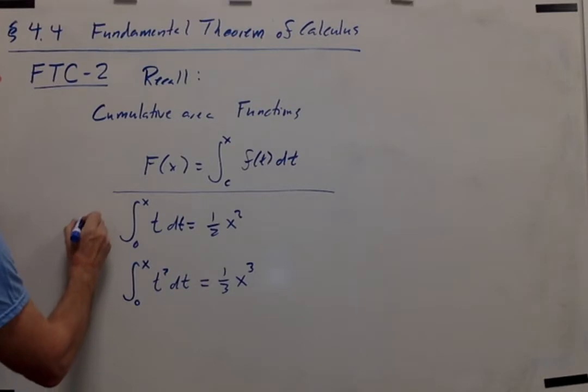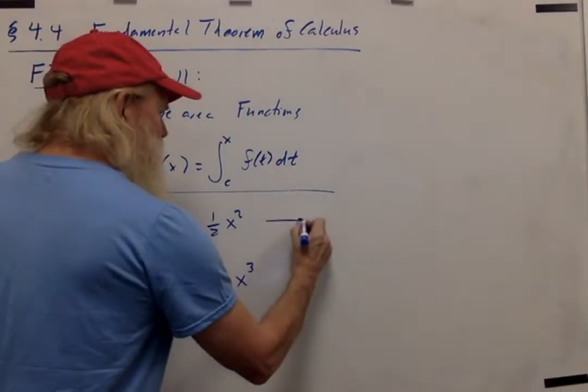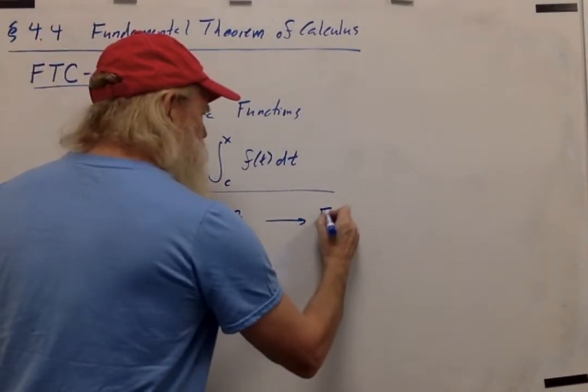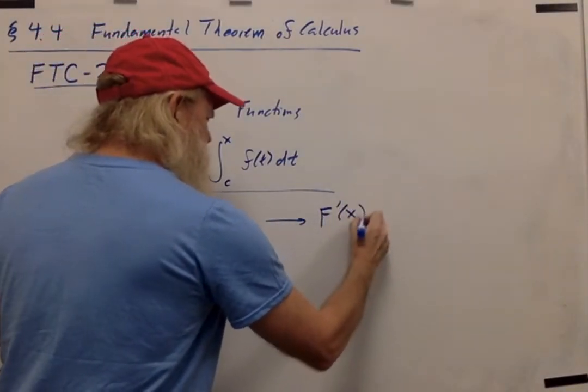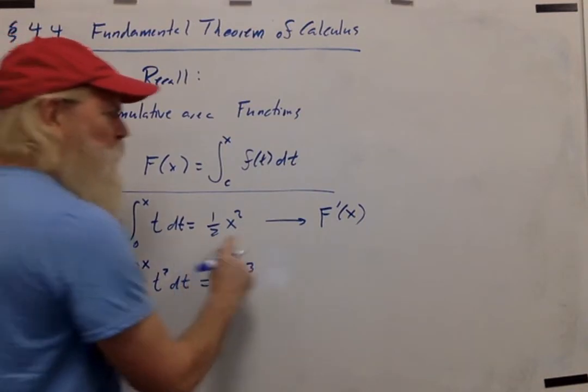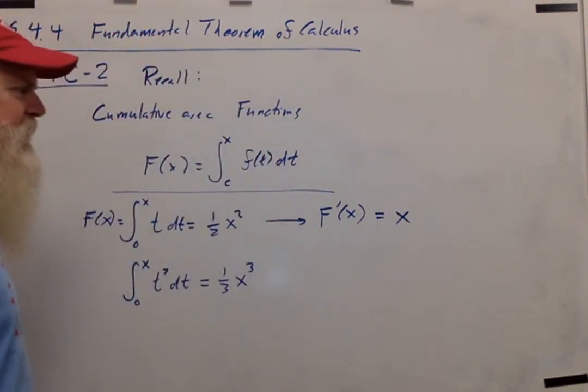So if we call this first function F, big F of x, something that you probably notice is that the derivative of this function, the derivative of 1/2 x squared, is just x.